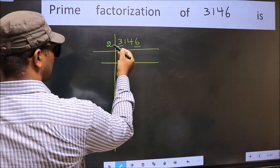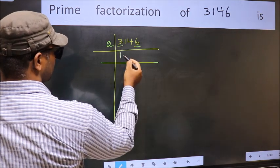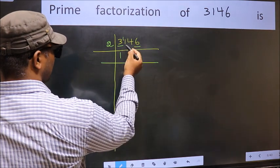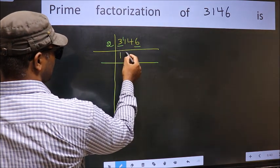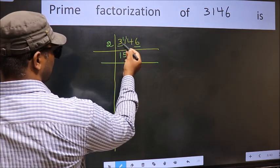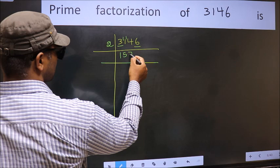First number 3. A number close to 3 in 2 table is 2, 1's 2. 3-2, 1, 1 carried forward 11. A number close to 11 in 2 table is 2, 5's 10. 11-10, 1, 1 carried forward 14. When do we get 14 in 2 table? 2, 7's 14.